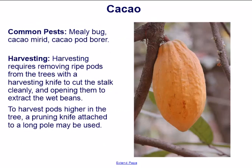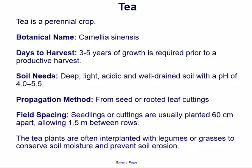Common pests include mealy bug, cacao mirrid, and cacao pod borer. Harvesting requires removing ripe pods from the trees with a harvesting knife to cut the stalk cleanly and opening them to extract the wet beans. To harvest pods higher in the tree, a pruning knife attached to a long pole may be used.